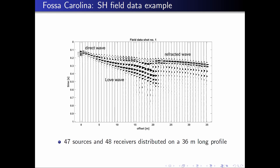Beside the refracted wave you can also see a very dispersive Love wave. Notice how the amplitude of the Love wave is quite significantly damped after passing the canal structure. This is already a first indicator that intrinsic damping of the medium — viscoelastic medium properties — have to be incorporated into our waveform inversion.